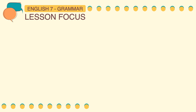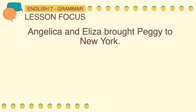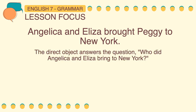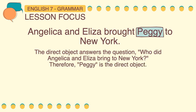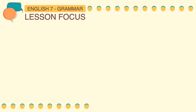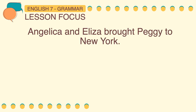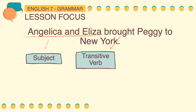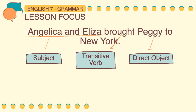Next example sentence: Angelica and Eliza brought Peggy to New York. The direct object answers the question: who did Angelica and Eliza bring to New York? Therefore, Peggy is the direct object. The sentence pattern of this sentence is STVDO. Angelica and Eliza is the compound subject, brought is the transitive verb, Peggy is the direct object, and to New York is a prepositional phrase.